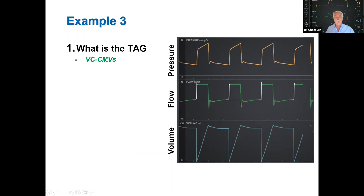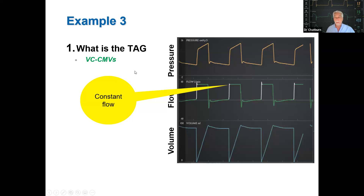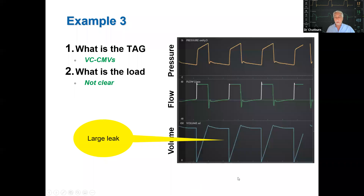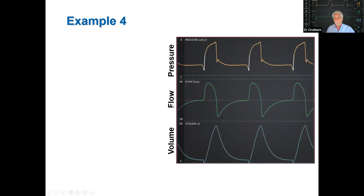Another example: volume control, continuous mandatory ventilation — we know this from the constant flow waveform. Every breath has the same inspiratory time (volume cycled), all mandatory breaths. But we see a big inspiratory volume and a very small expiratory volume, with a big reset back to zero. The ventilator is just resetting the volume waveform as the next inspiration starts. This indicates a large leak, and we can identify a false trigger from the high respiratory rate.